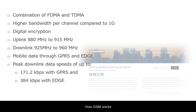The bandwidth of each channel was 200 kHz, which means that GSM had more capacity than the earlier 1G networks. GSM used digital encryption, which is why it was more secure, and in the extended frequency band, GSM used 880 to 915 MHz for the uplink and 925 to 960 MHz for the downlink.